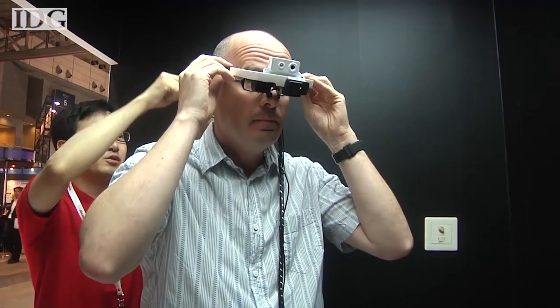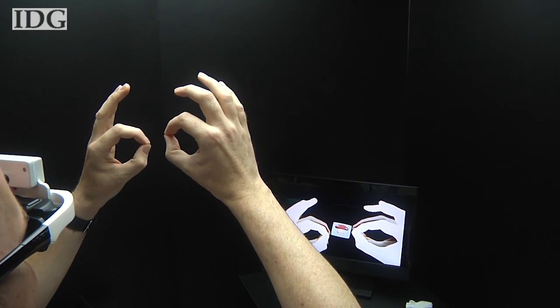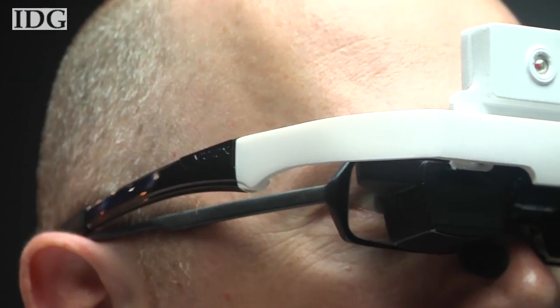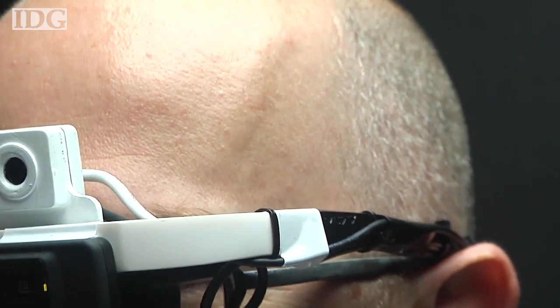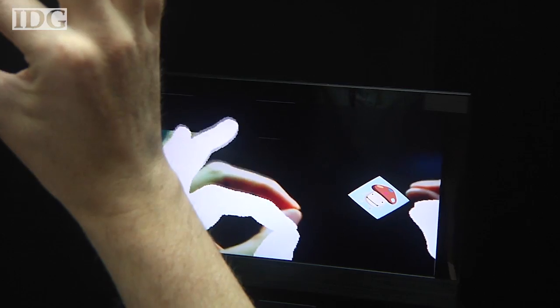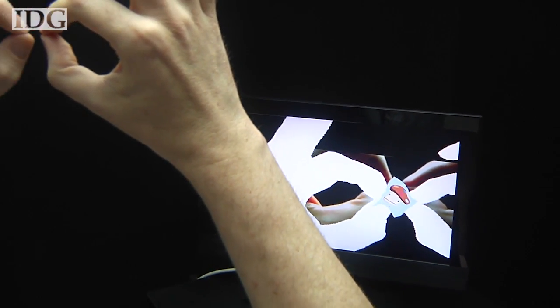Alongside, Docomo showed a similar project that let me interact with virtual objects in 3D space. The glasses include a camera to track my hands, as well as a display for me to see what I'm interacting with. The TV here is so that other people can see what I'm seeing.